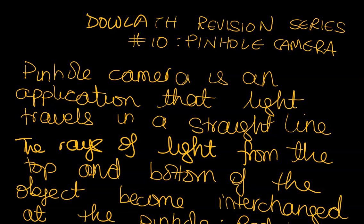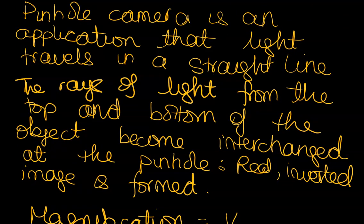It considers two rays of light, one from the top and one from the bottom. These rays become interchanged as they pass through the pinhole. Typically, you would have a real inverted image being formed. The magnification of that is a ratio of V to U, and magnification is a dimensionless quantity, which means that you do not have any unit.